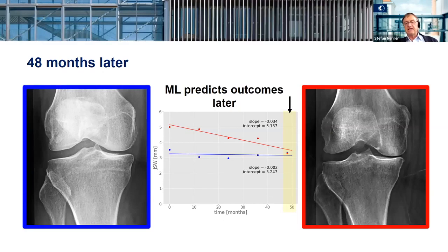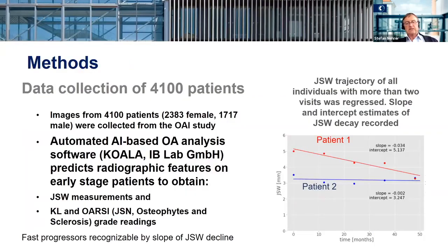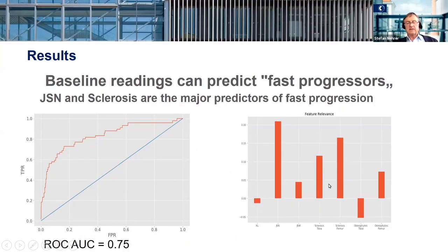We looked at whether there are any indicators in the data that we can use to find prognostic values for this progression. We took 4,100 images from patients and fed them into the computer and looked at which X-rays showed progression of disease. We found a vector correlating with progression — if joint space goes down, we have progression. We found that sclerosis of the tibia and femur were very predictive. Joint space narrowing is always predictive. On the other hand, the presence of osteophytes really doesn't show much in terms of disease progression.